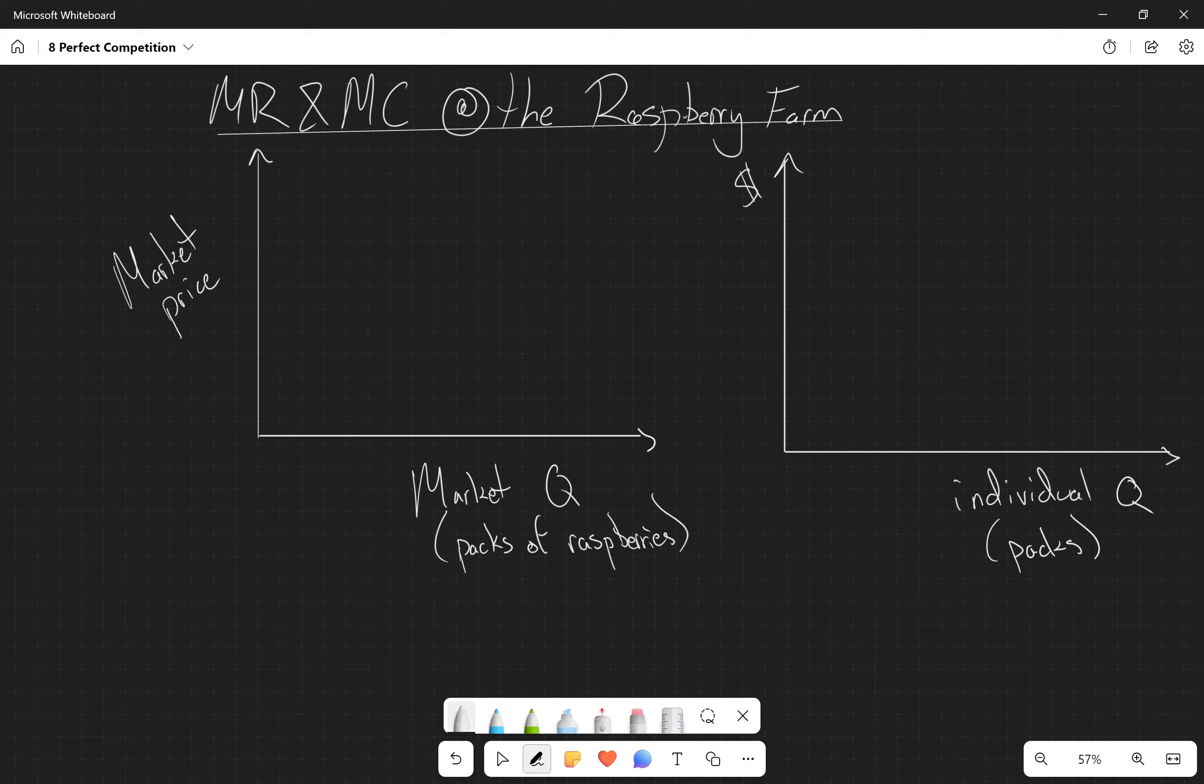All right, let's do an example right now. Going back to our raspberry farm example, we have on the left here a graph talking about the market price and market quantity. We know that the market price is going to be determined by a combination of demand curve and supply curve.